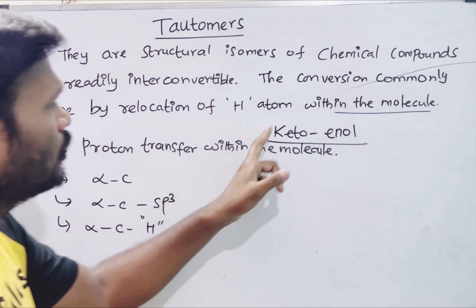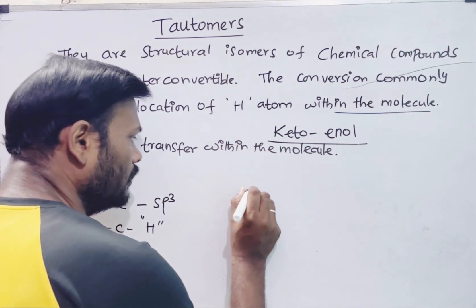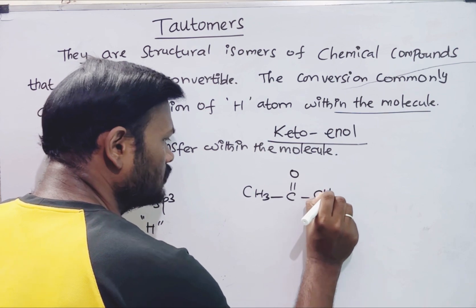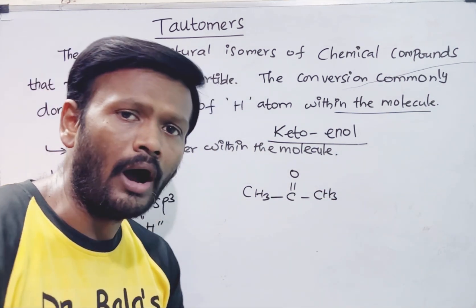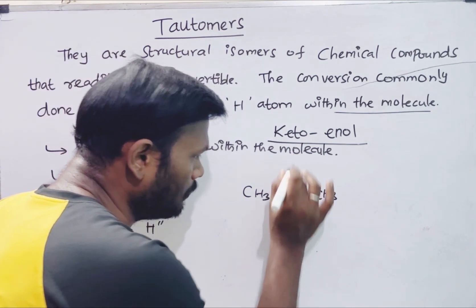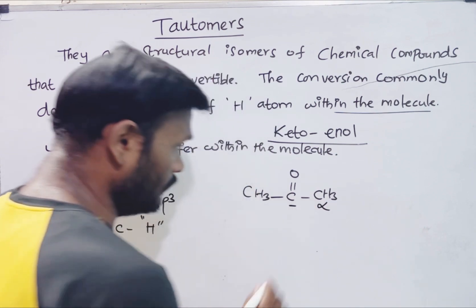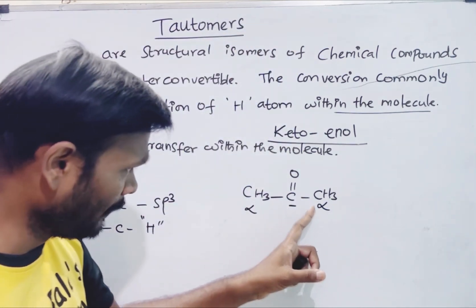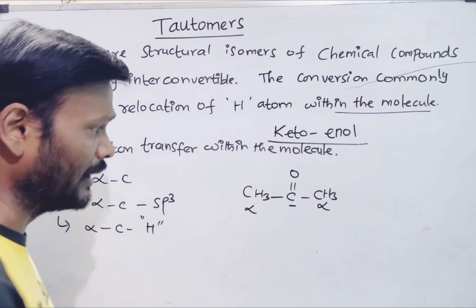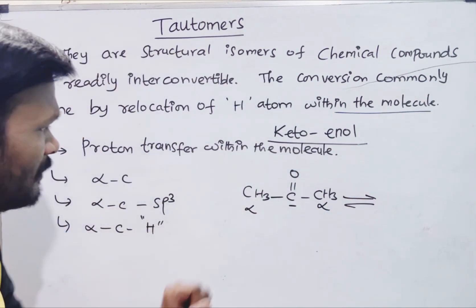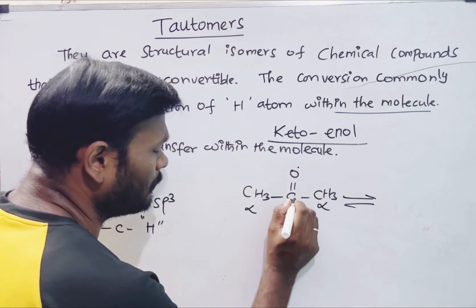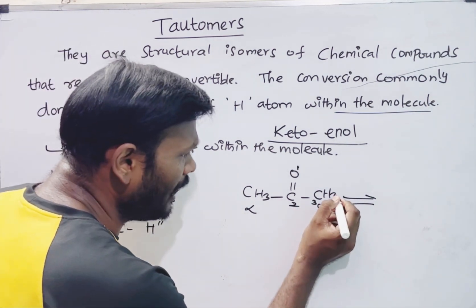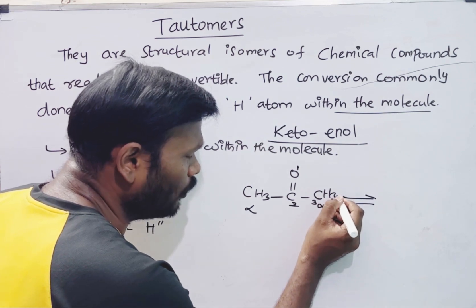Let's check keto-enol tautomerism with an example. For example: CH3–C(=O)–CH3. This is the molecule. The functional group is C double bond O. This is alpha carbon on both sides. The alpha carbon adjacent to the double bond will shift its hydrogen.